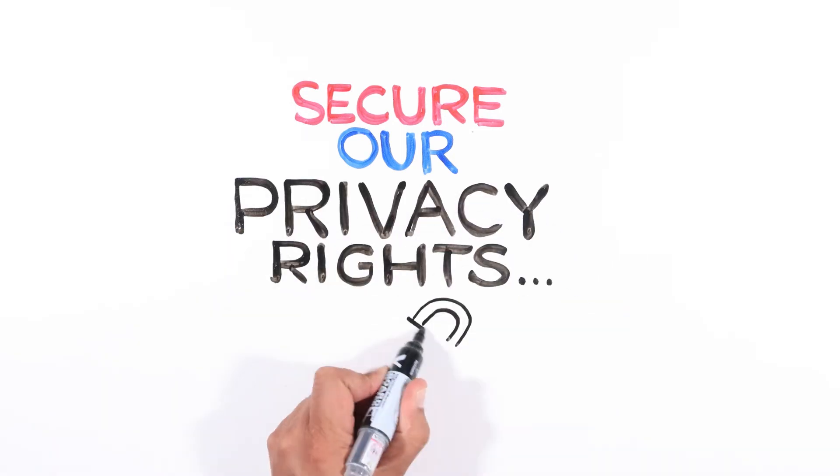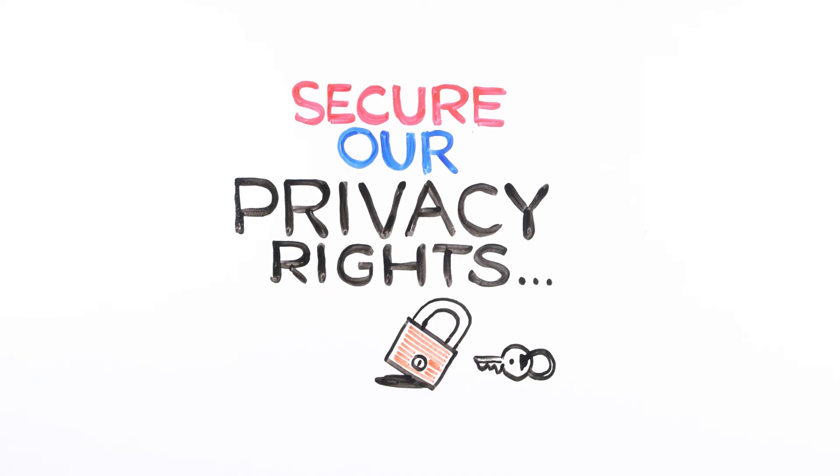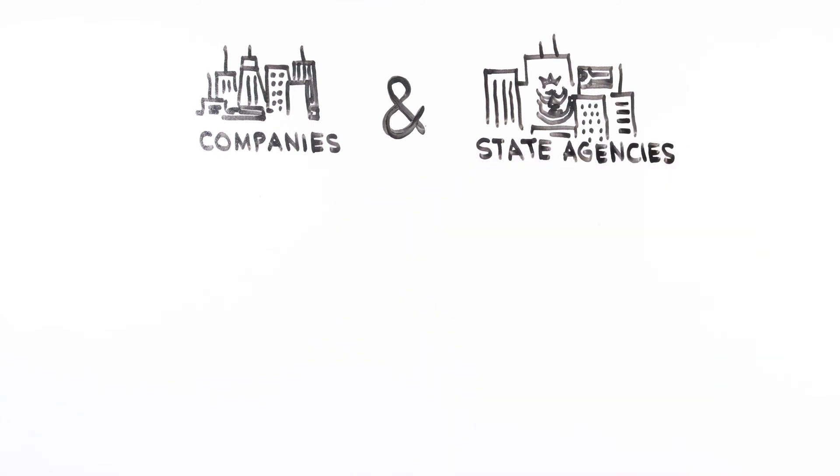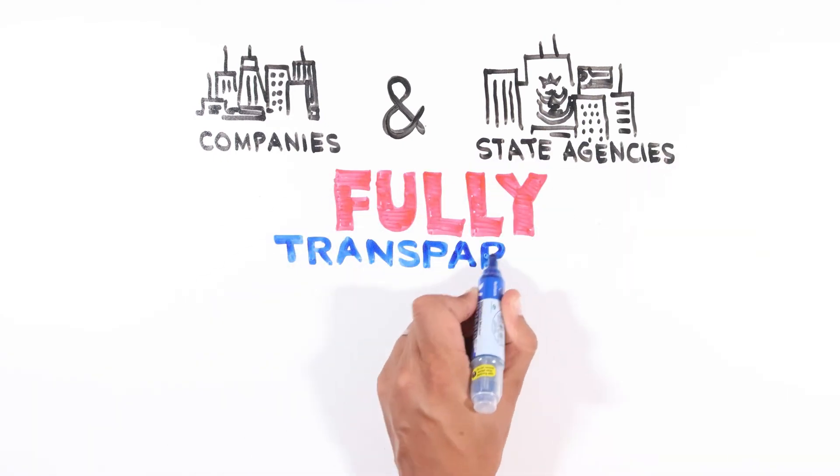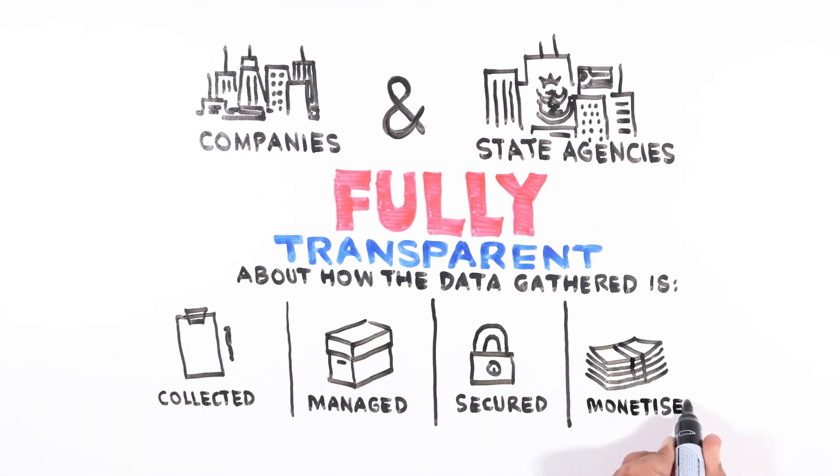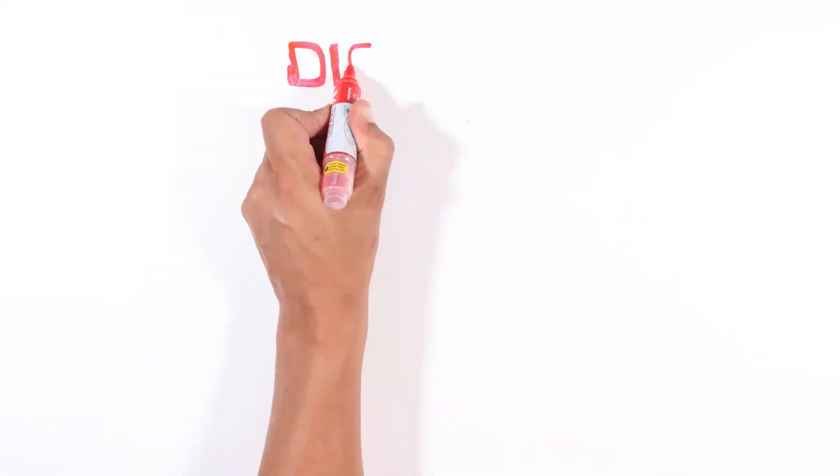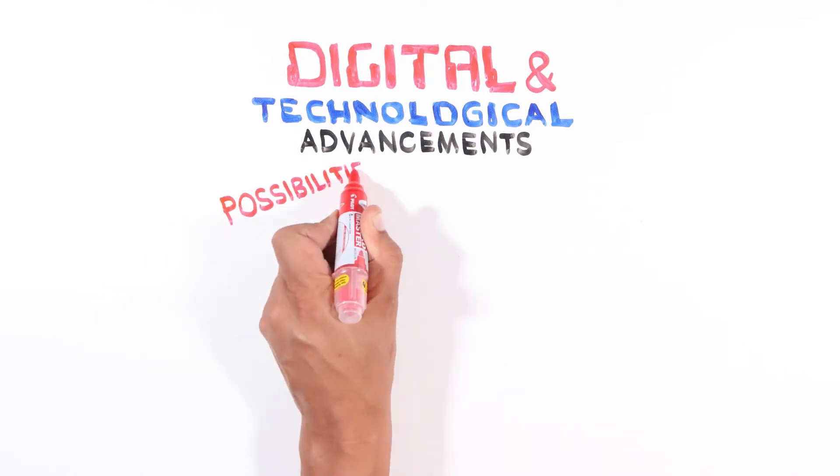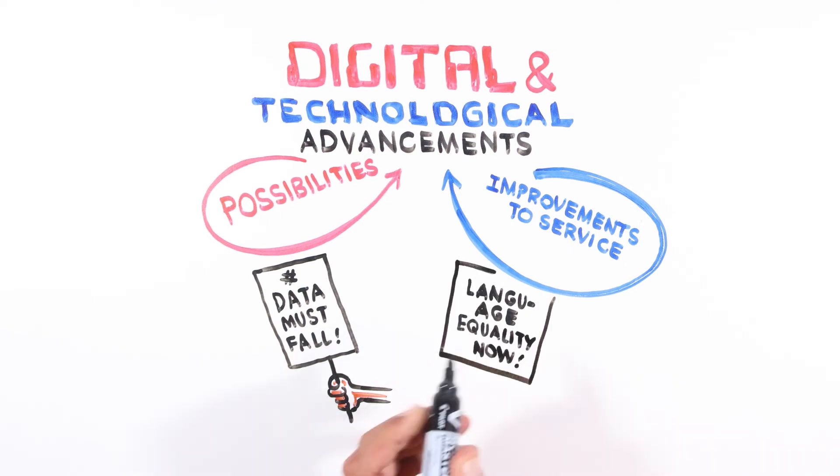Not exactly. Our investigation into GovChat and digital profiteers has led us to recommend the following to secure our privacy rights. One: Companies and state agencies must be fully transparent about how the data gathered as part of a digital grant application process is collected, managed and secured, and crucially, how it will be monetized. Two: Digital and technological advancements provide significant possibilities and improvements to service. But these advantages are not guaranteed. Reducing data costs and ensuring all languages are accommodated is vital for this.